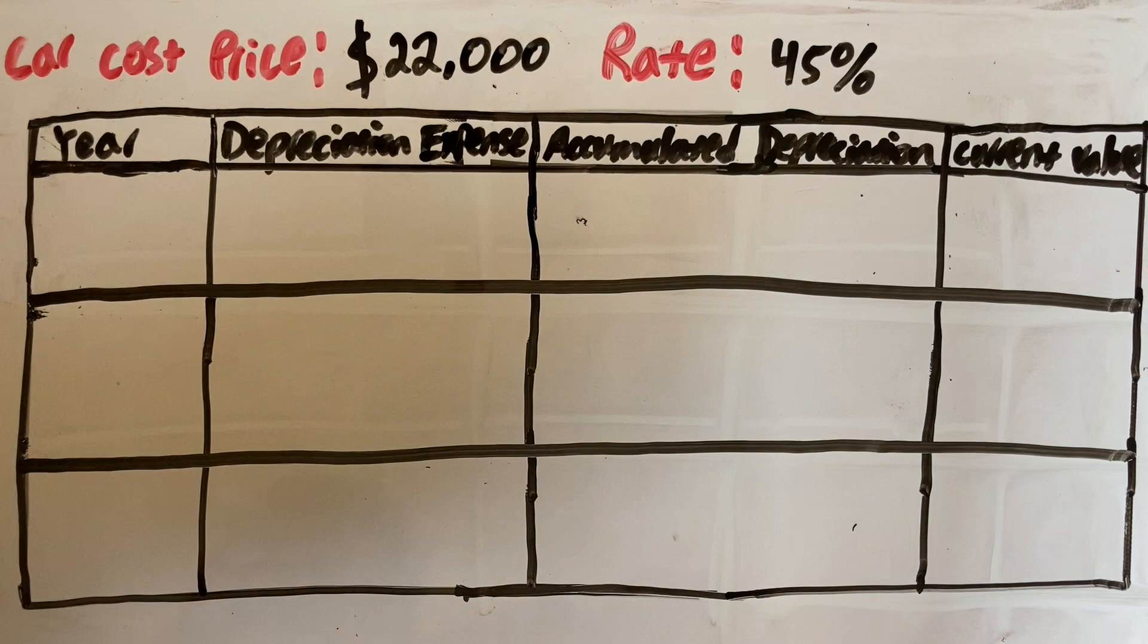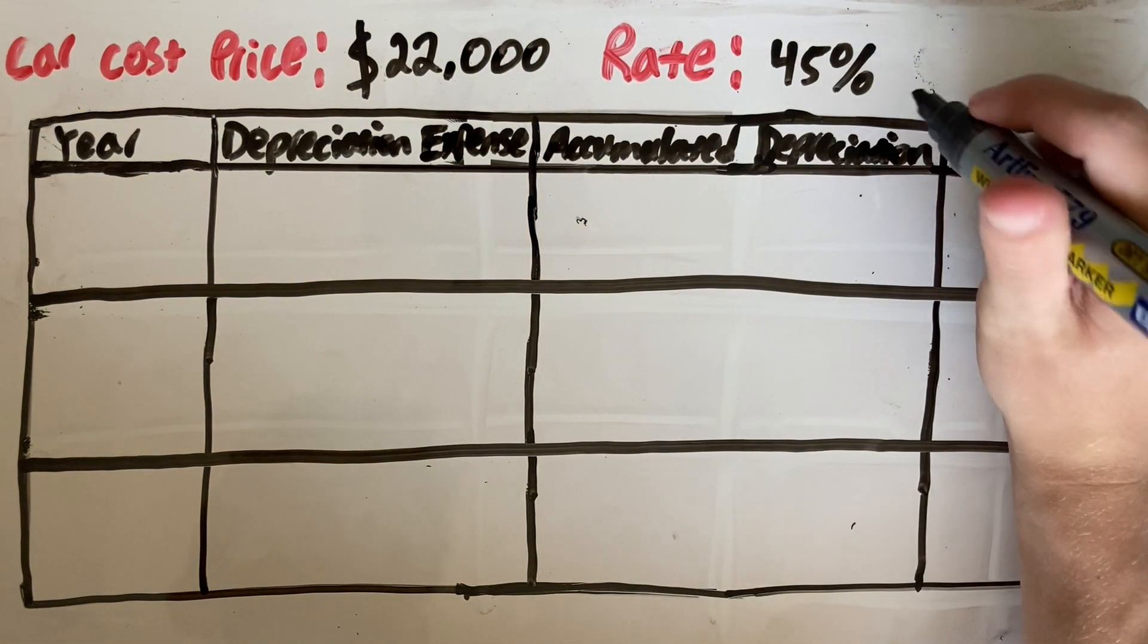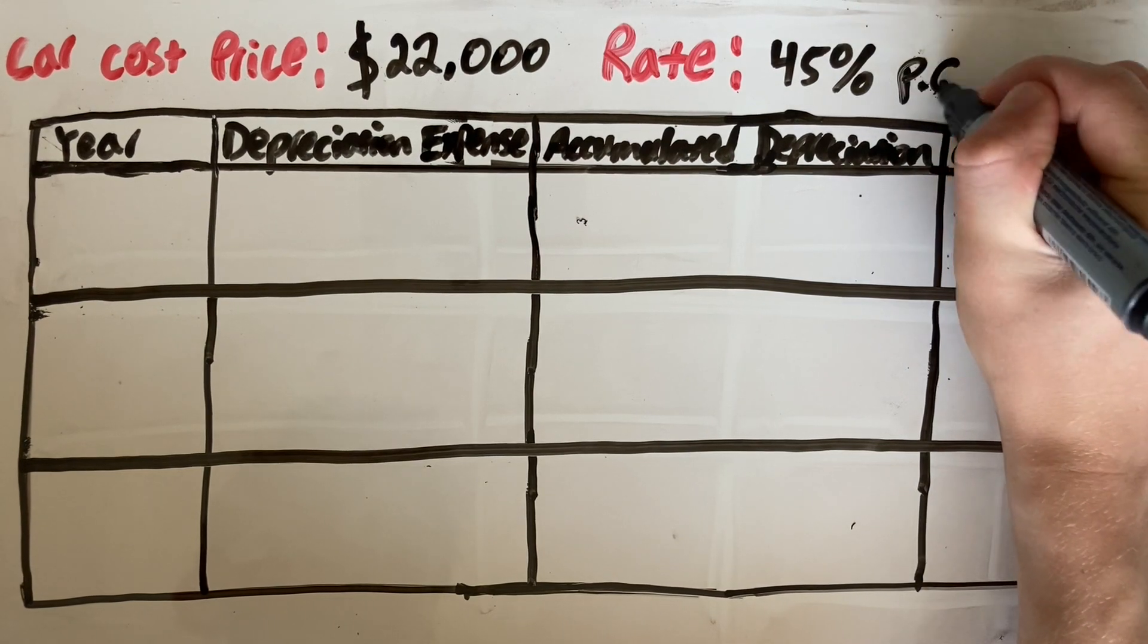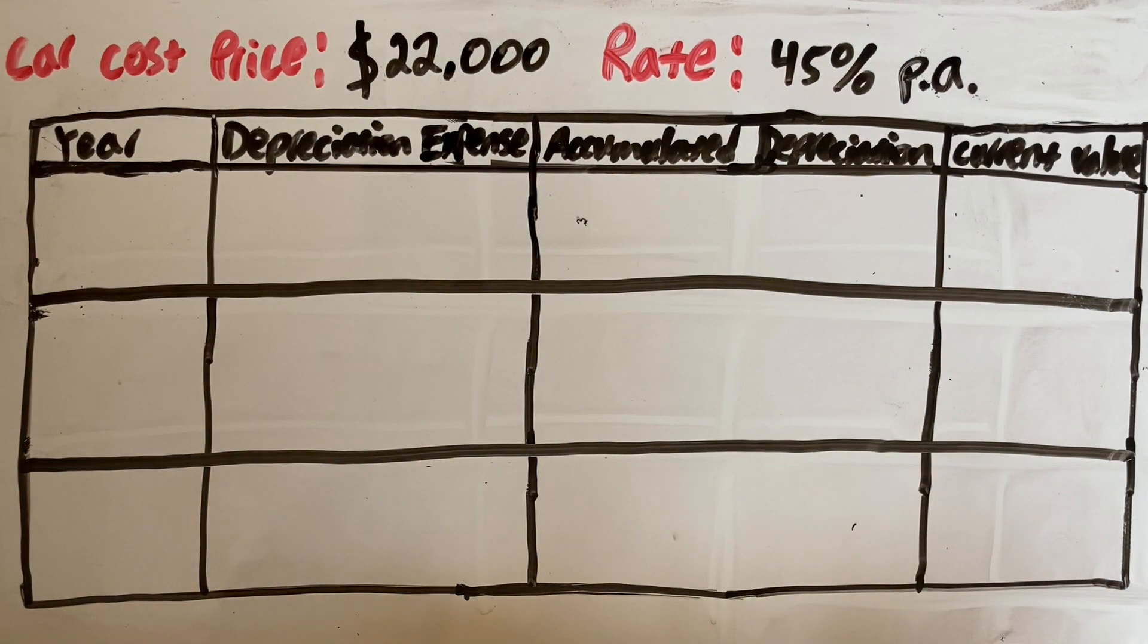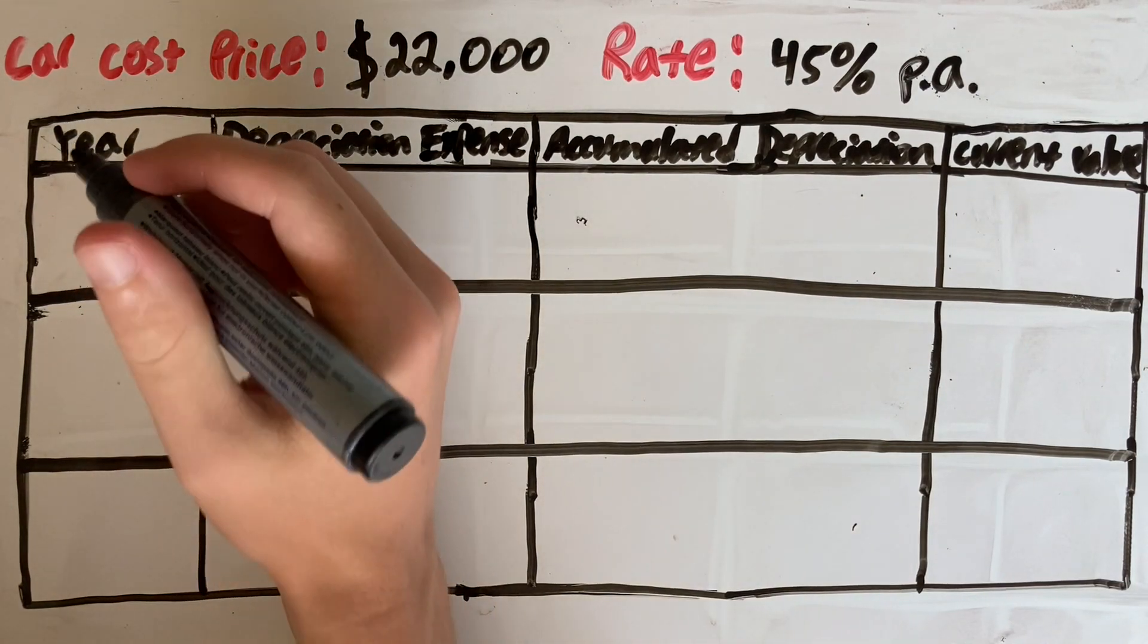For this example I'm going to show you how to depreciate this car using the reducing balance method over three years. Our car cost price is $22,000 and the rate of depreciation is 45% per annum. So I made a little table here to help you understand this. I have the year, the depreciation expense, the accumulated depreciation and the current value.